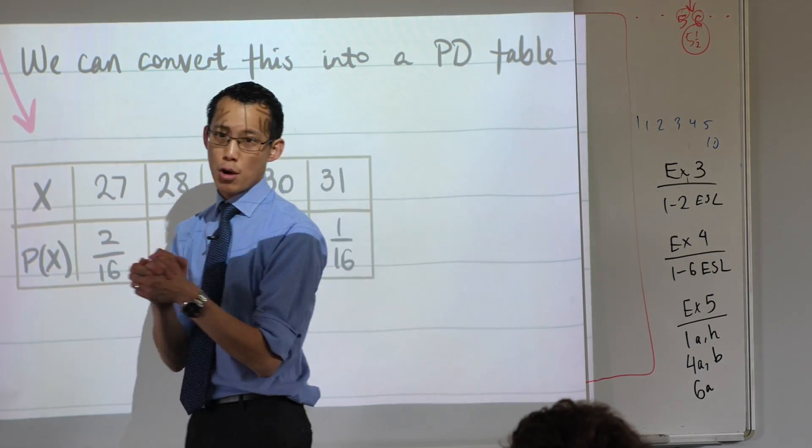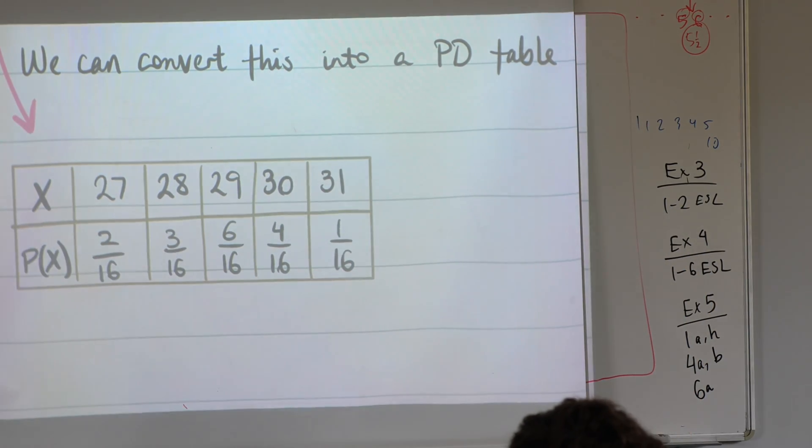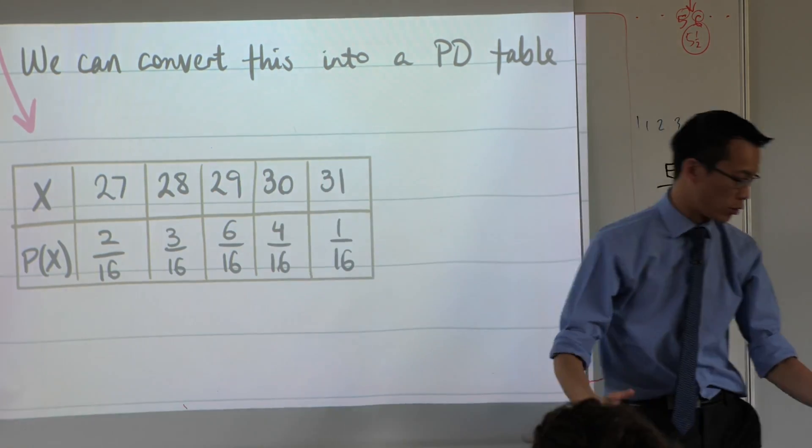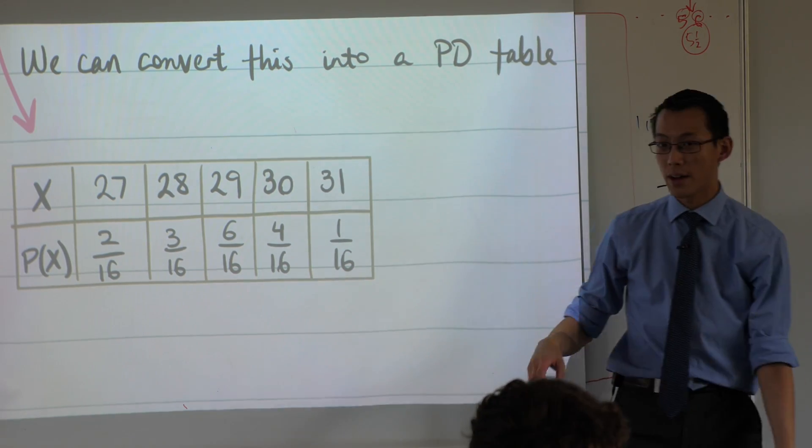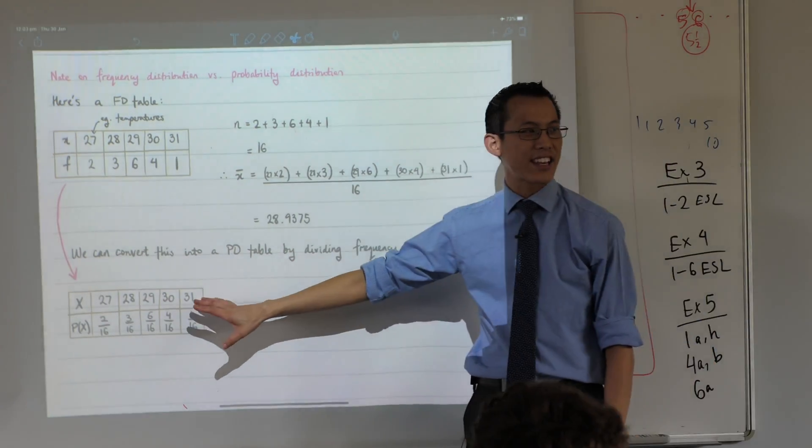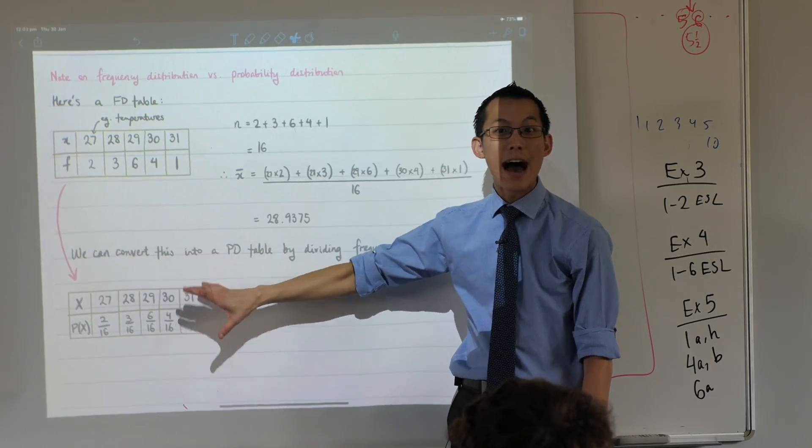Now when we're looking at probability distribution tables, that's a mouthful, we didn't talk about means, we talked about something else. It started with an E, does anyone remember? We're talking about something that summarizes the whole thing all together in a single number. It's actually two words. We talked about getting an expected value out of this.